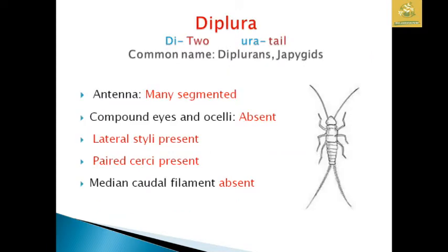Next we are going to see the order Diplura, where 'Di' means two and 'Ura' means tails. Their common names are Diplurans and Japygids. They have multi-segmented antennae. Compound eyes and ocelli are absent. They present lateral cerci and the medial caudal filament is absent in some.